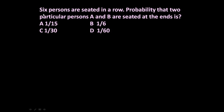The given problem is: 6 persons are seated in a row. The probability that 2 particular persons A and B are seated at the ends is — what is the probability that A and B are at either of the ends? A and B are at the ends. 4 options are given.